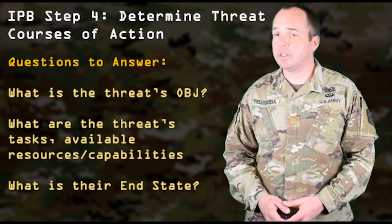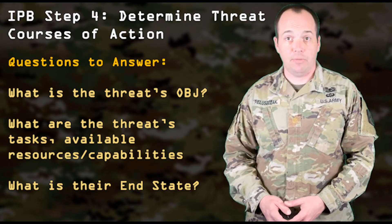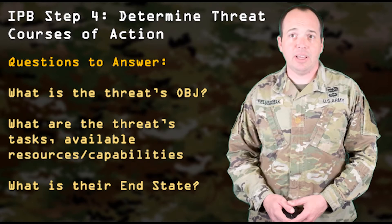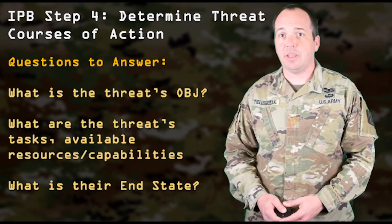Sub-step 1 for Step 4 requires analysis of previous IPB steps to enable threat COA development by understanding threat characteristics, threat operational art and capabilities, terrain effects, and civilian considerations within the operational environment. We should ask ourselves: What is the threat's objective? How do they intend to achieve that objective through threat tasks? What are the available resources and capabilities, and what is the final threat end state? What do they want, and how are they going to achieve that?